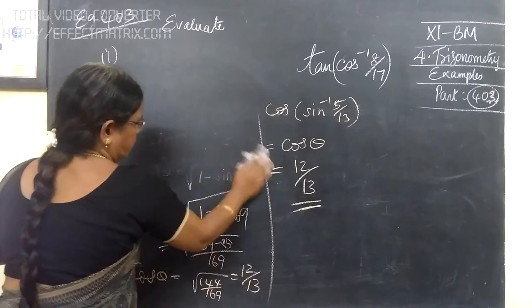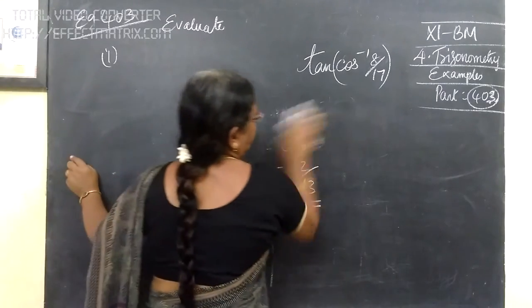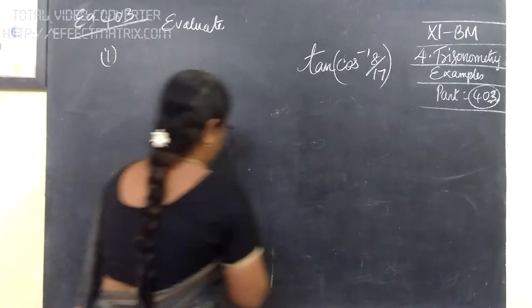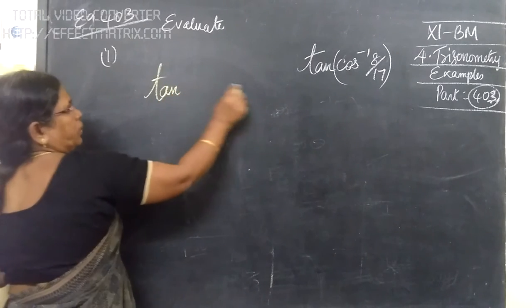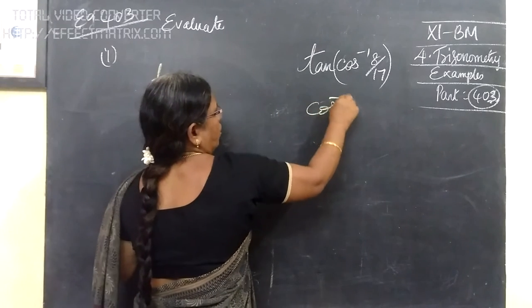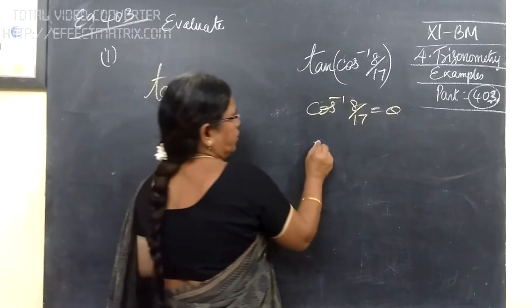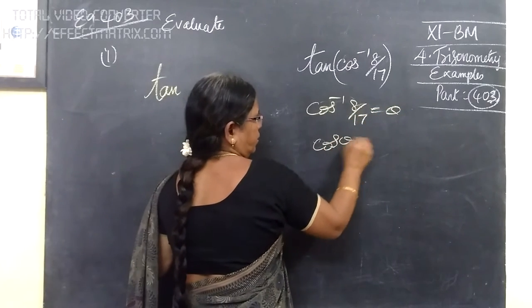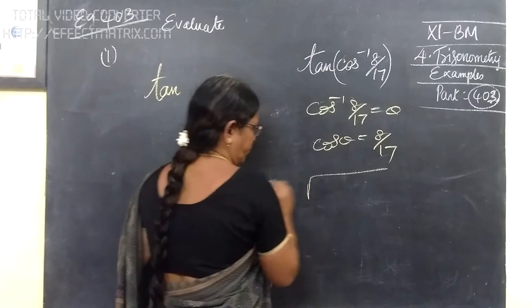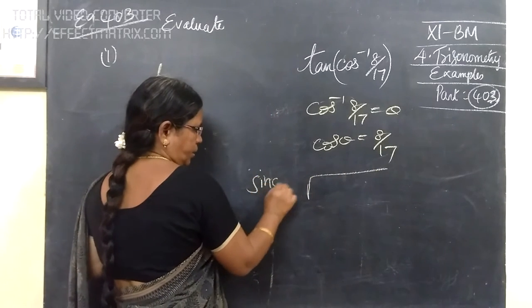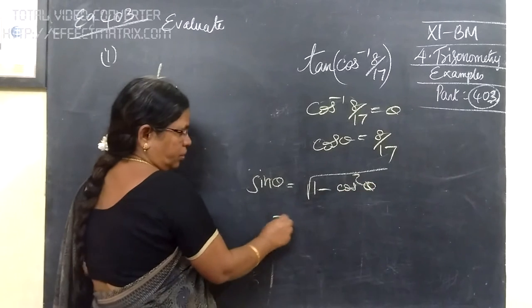Tan of cos⁻¹(8/17). Let this be theta. So, equal to tan of, let this be theta. Cos inverse 8 by 17. Let this be theta. Therefore, cos theta equals 8 by 17. Then tan theta. Tan theta equals root of 1 minus cos squared theta.